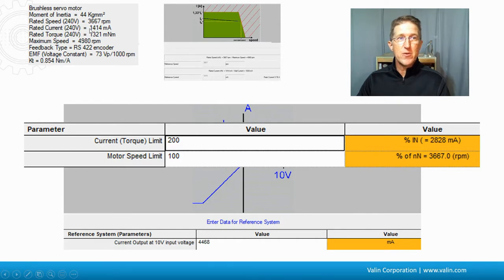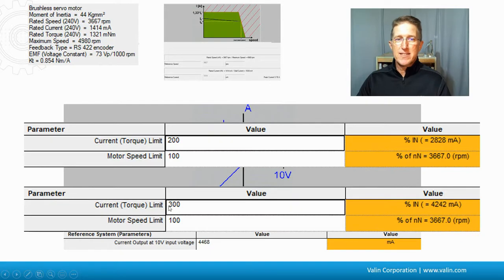So typically servomotors can go up to maybe three times that. So perhaps we want to set that to 300 so that we can put out that 4.2 amps.